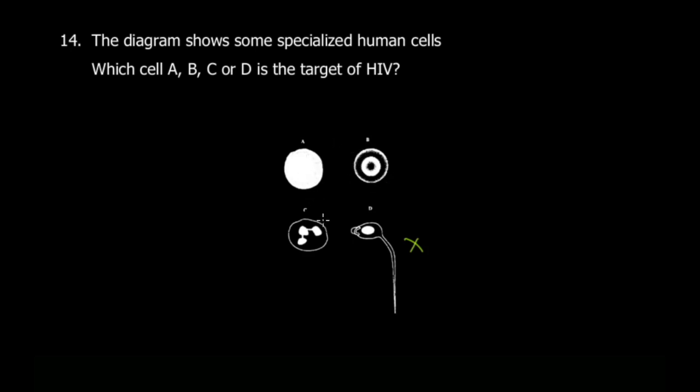This one here is called a neutrophil. You can see from those three lobes - whenever you see this three-lobed structure, it's a neutrophil. Neutrophil is a type of white blood cell, but this type is generally not affected by HIV. This one here is a red blood cell.